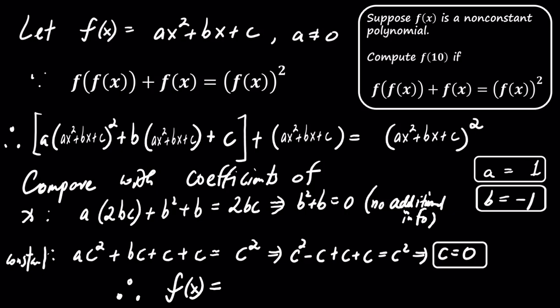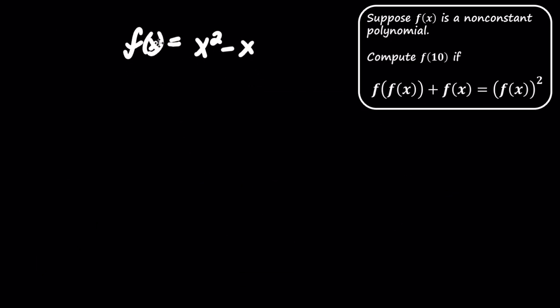So now we know that f of x equals x squared minus x. Now that we know f of x equals x squared minus x, we can compute f of 10 by substituting x equals 10 into the equation, giving us 90.